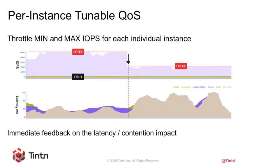How easy is it? This is a picture from our VMStore UI. You take the red bar and move it up and down, and that's it. There's no scripting or pressing complex knobs — whoever is your cloud admin with access to this dashboard searches for the instance, opens up the show graphic, and can see the IOPS, latency, and contention impact. There is also a minimum IOPS setting — some minimum IOPS are required for your application to have the minimum viable performance SLA. You just move the minimum bar up and you're done.